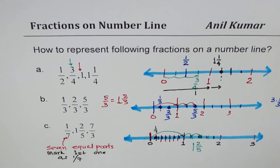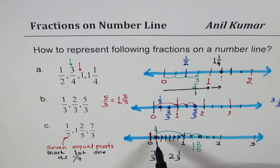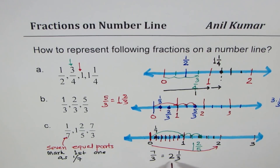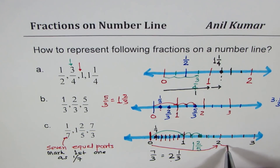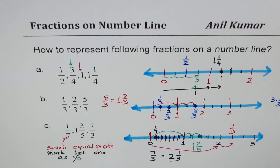For 7/3, we can convert it: dividing 7 by 3 gives 2 whole and remainder 1, so 7/3 equals 2 and 1/3. So from 0 we go to 2 whole, then divide the segment from 2 to 3 into three equal parts, and move one-third further. That point is 7/3.